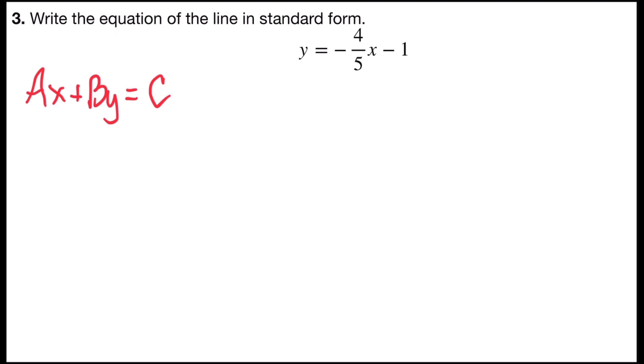Now we remember that a, b, and c have to be integers. That means no decimals, no fractions. But in my equation, I have a negative four-fifths as a coefficient on the x. So in order to eliminate the fractions first, I'm going to multiply both sides by the least common denominator. In this case, it's five, since it's the only denominator.